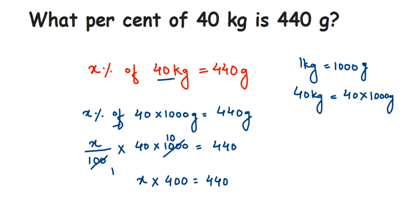Now I want the value of X. I don't want 400 here. I'm going to transpose this to the other side. Now this 400 is in multiplication. When you transpose this to the other side, it comes in division. So this will be equal to, when I transpose 400 to the other side, it comes in division.